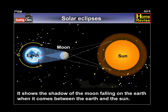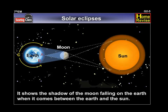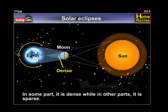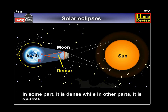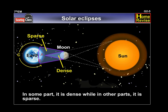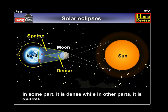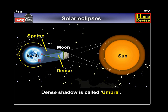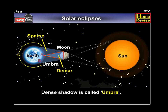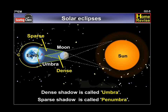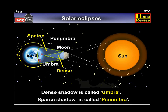The shadow is of two types. In some part it is dense while in other parts it is sparse. The dense shadow is called umbra and the sparse shadow is called penumbra.